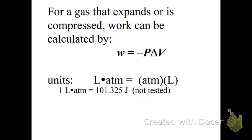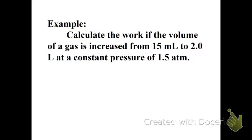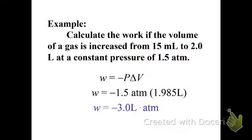For a gas that expands or is compressed, work can be calculated by W equals negative P delta V. I hope you know by now that P is pressure and V is volume. Hope you know that little delta sign means change in. The units are liter atmosphere, which is equivalent to 101.325 joules, but that's not tested on the AP exam. Calculate the work if the volume of a gas is increased from 15 milliliters to 2 liters at constant pressure of 1.5 atmosphere. I'm going to make you work that one yourself too. How would we work this one? Work is equal to negative P delta V. We got negative 1.5 atmosphere times the change in volume, and so it would be negative 3.0 liters. Man, y'all are good.